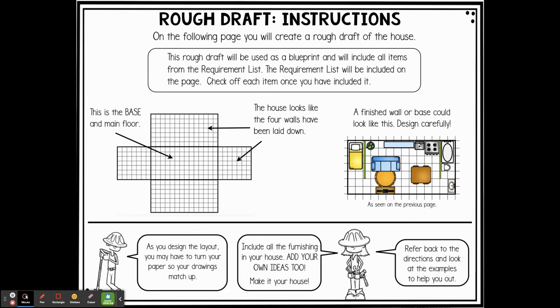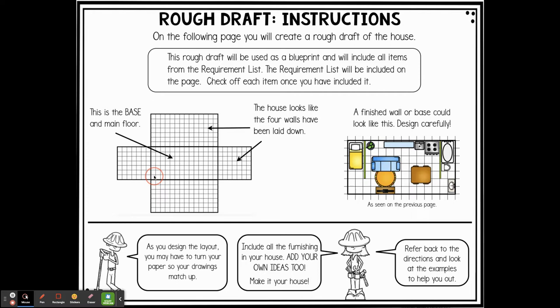So again, this right here is what the rough draft is going to look like — it's a little bit different than your final. The square in the middle is the base. These outside rectangles are the walls. You have to imagine that this is going to fold up — each outside rectangle is going to fold up to create the four walls of your house. Check off the items after you add them to your house.